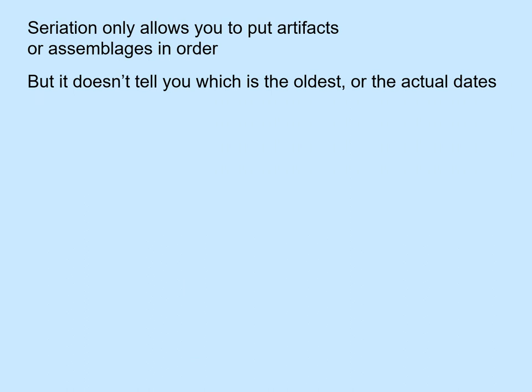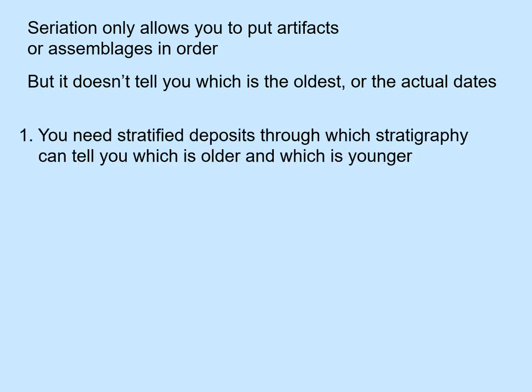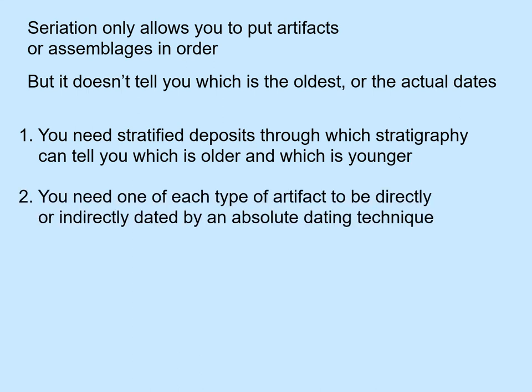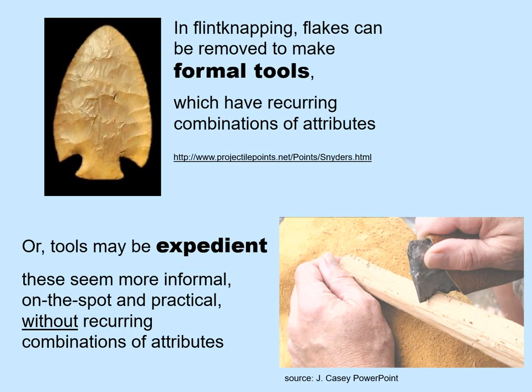Seriation only allows you to put artifacts or assemblages in order, but it doesn't tell you which is the oldest and it doesn't tell you the actual dates. So you need to find stratified deposits through which the stratigraphy can tell you which is older and which is younger. Additionally, you need to date one of each type of artifact using an absolute dating technique, either directly or indirectly.